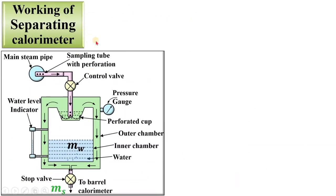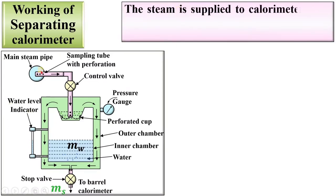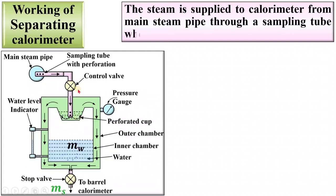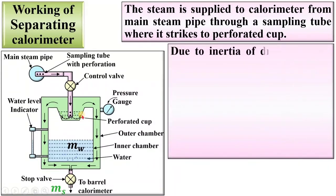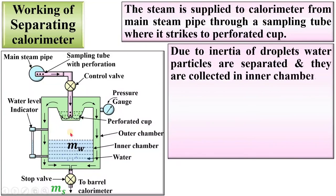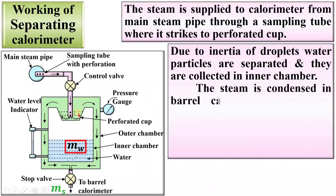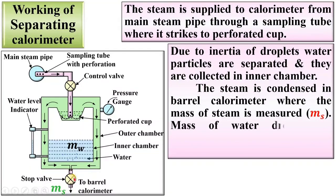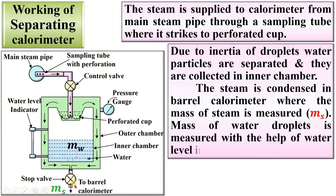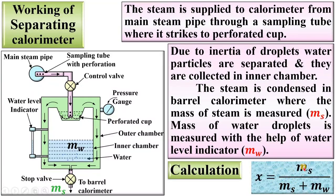Now let's see the working of the separating calorimeter. The steam is supplied to the calorimeter from the steam main pipe through a sampling tube, where it strikes the perforated cup. Due to the inertia of droplets, water particles are separated and collected in the inner chamber. The steam is condensed in the barrel calorimeter, where the mass of the steam is measured. If you are able to measure ms and mw, then you can find the dryness fraction of the steam using this formula.